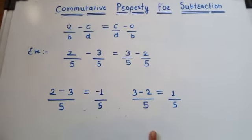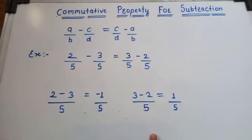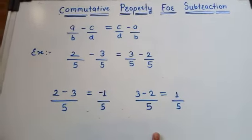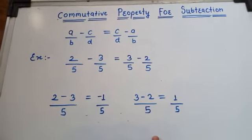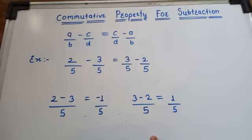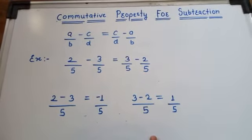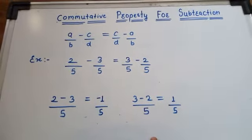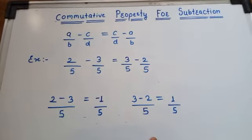To prove this, we are going to take an example. We have 2 by 5 minus 3 by 5 is equal to 3 by 5 minus 2 by 5.